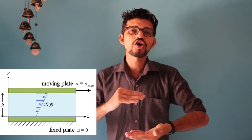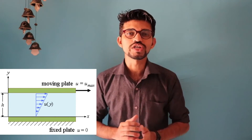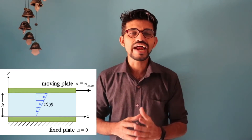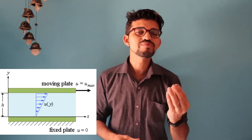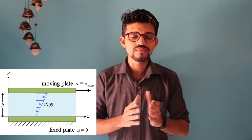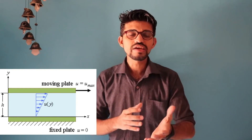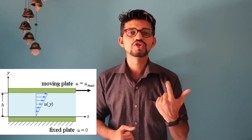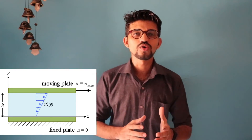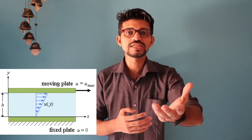The layer of water in contact with the bottom fixed plate will have the minimum velocity. This is the velocity gradient. It is very useful for determining different types of fluid flows. This can vary for viscous fluids, Newtonian fluids, and non-Newtonian fluids. As the viscosity of a particular fluid changes, this curve also changes — that is the velocity gradient.